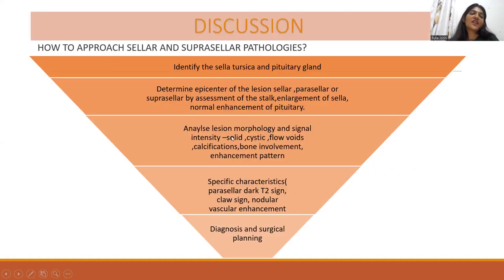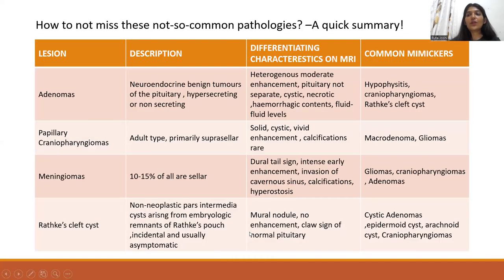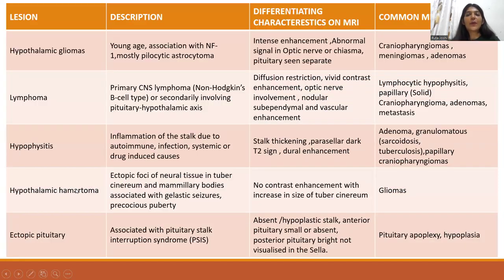How do we approach these sellar and suprasellar pathologies? Identify the sella turcica and the gland. Determine the epicenter of the lesion — whether it is sellar, parasellar, or suprasellar. Analyze the lesion morphology: signal intensity, solid versus cystic, bone involvement, calcification, and enhancement. Then look for specific characteristics like parasellar dark T2 sign, claw sign, nodular vascular enhancement, and pachymeningeal enhancement, which would confirm the diagnosis and guide surgical planning. There is a quick summary of the mimickers of these not-so-common pathologies with differentiating characteristics listed.